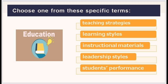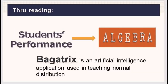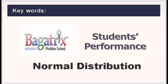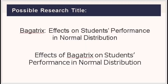If education is the broader topic I am knowledgeable and interested in, the possible subtopics are teaching strategies, learning styles, instructional materials, leadership styles, and students' performance. Let's say through my reading about students' performance, I got information about students' performance in algebra. Through further reading about how to improve students' performance in algebra, I obtained significant information about Bagatrix, which is an artificial intelligence application in teaching normal distribution. So my key words were: students' performance, Bagatrix, and normal distribution. My research title could be: 'Bagatrix: Effects on Students' Performance in Normal Distribution,' or 'Effects of Bagatrix on Students' Performance in Normal Distribution.'